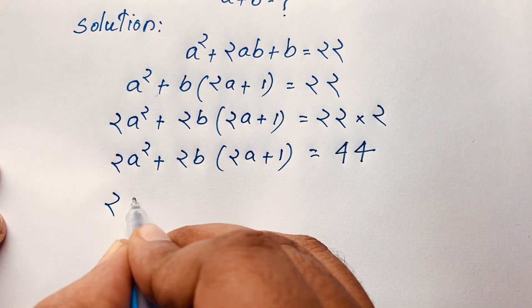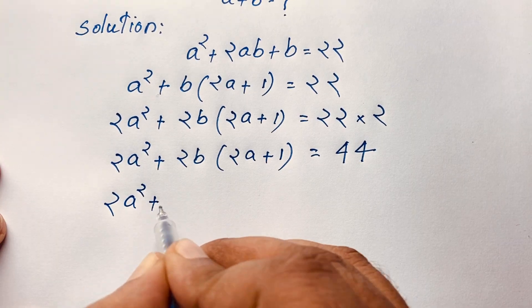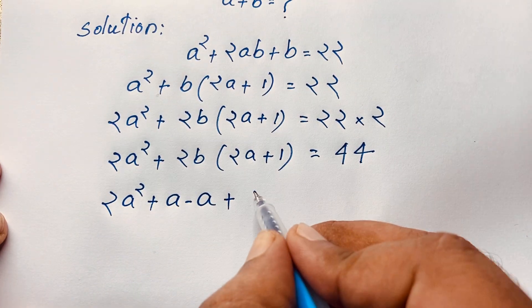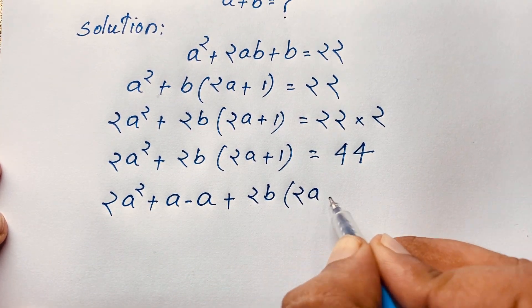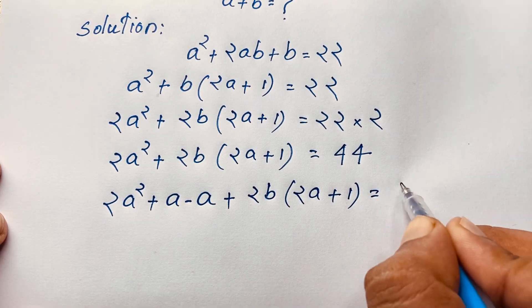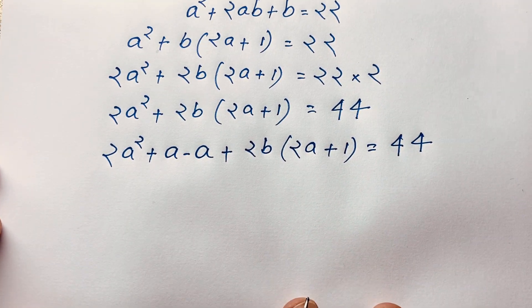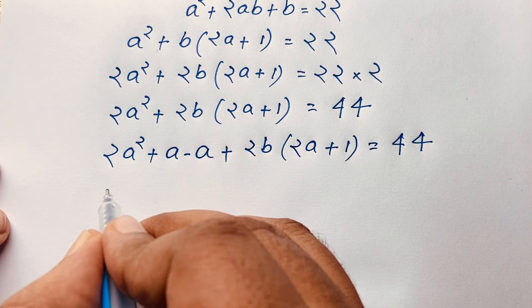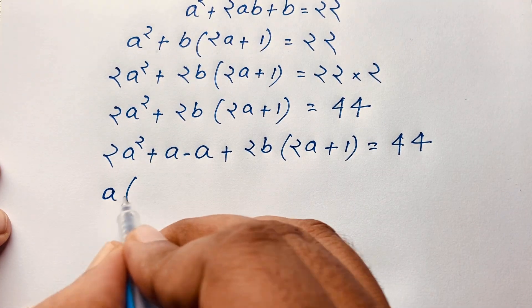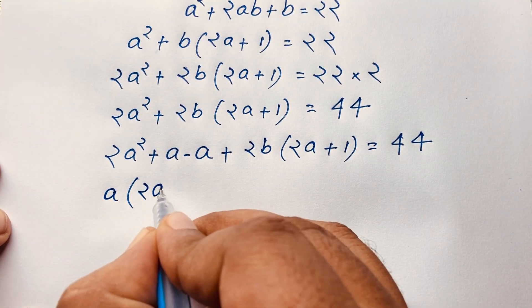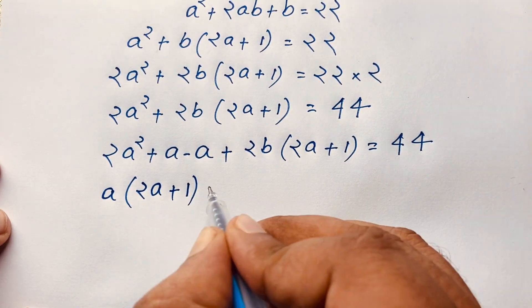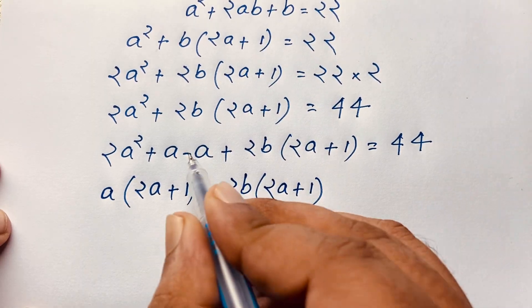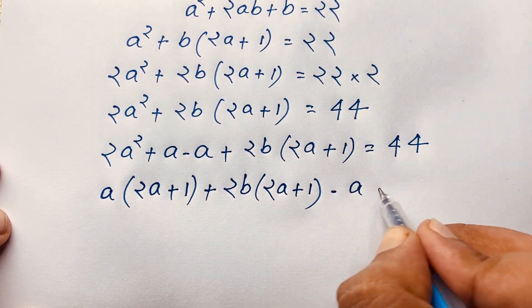You can see here is 2a squared, so I take out a. Then subtracting a from both sides gives 2b times (2a plus 1) equal to 44. Looking at 2a squared plus a, you can see a is a common factor: factoring gives a times (2a plus 1). Bringing this below, we have 2b times (2a plus 1) minus a equal to 44.